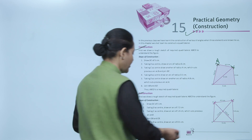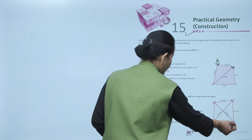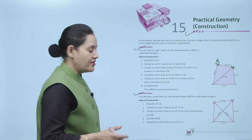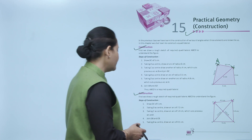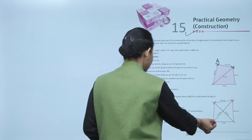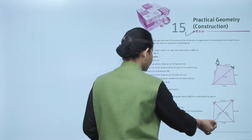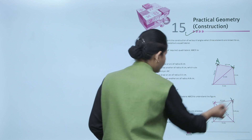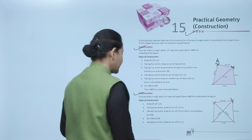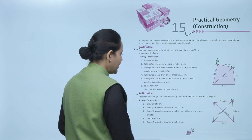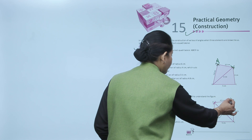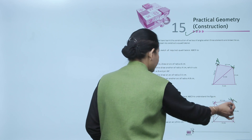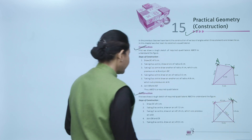Here, what we have done first: we have drawn DC = 5 cm using a ruler. Now, with D as a center, we draw an arc of 7.2 cm. Then, with C as a center, 5.4 cm — this intersection point is B.